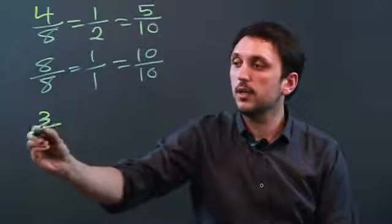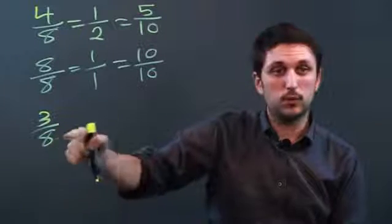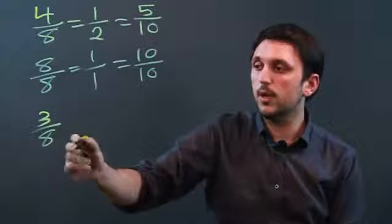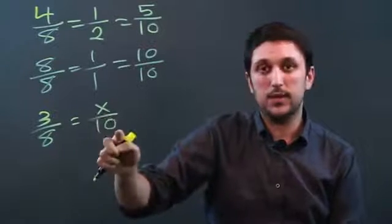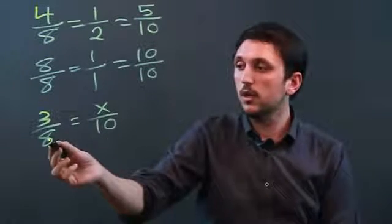So let's say we have 3 over 8. Well, because it won't translate to tenths, what we can say is, what is the lowest common denominator of 8 and 10? And that would be 40.